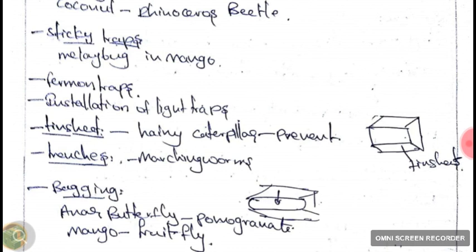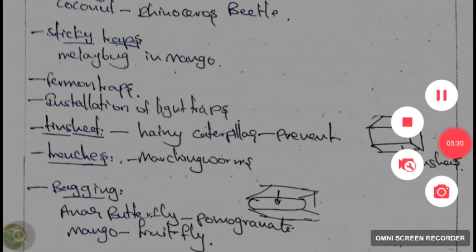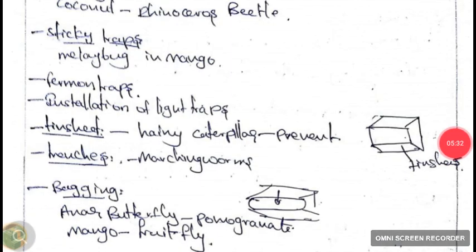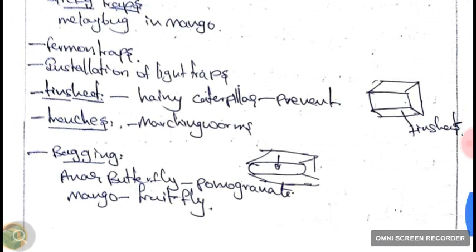Next one is trenches. Trenches are used for marching worms. Marching worms march from one field to another field, but they are prevented by trenches — they will fall into the trenches so that we can prevent them from entering our fields.